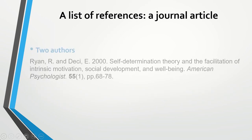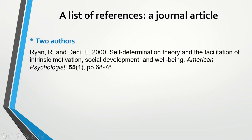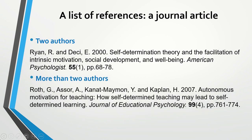If you refer to a journal article with two authors, you should do exactly the same, but provide the names of both authors. The rest of the information is the same: year of publication, title of the article, title of the journal, volume number, issue number, and page numbers. If the article has more than two authors, you must provide everybody's name, with 'and' before the last author's name.